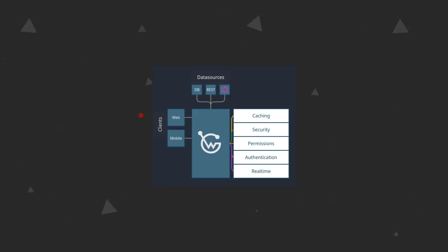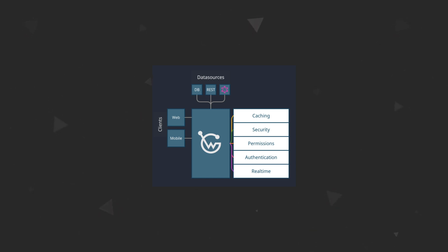What does Wundergraph do? To put it into simpler terms, Wundergraph will connect to all of your APIs and become a central spot for getting and updating data. I should probably use the term data sources, because Wundergraph has the ability to merge multiple data sources into a single source with which you can communicate to display, update or add data using GraphQL. Those data sources can be databases, GraphQL APIs or REST APIs, so Wundergraph essentially becomes middleware between your data and your application — from web to mobile — providing a single GraphQL API.